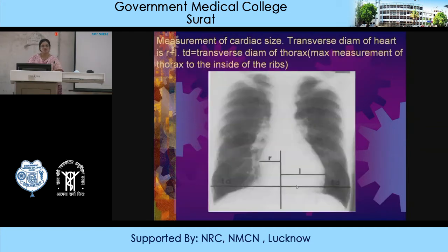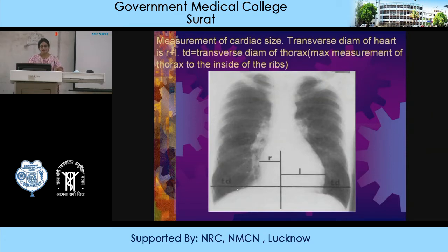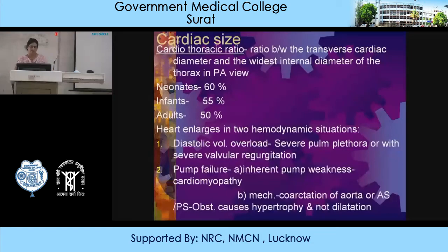To measure cardiac size: draw a vertical line overlying the spinous processes — the frontal film must be centered. Measure the maximum dimension from this vertical line to the right cardiac border, then to the left cardiac border. Add right plus left, then divide by the transverse diameter (maximum measurement of the thorax from inside the ribs). R plus L divided by transverse diameter gives the ratio: 60%, 55%, and 50% for neonates, infants, and adults respectively. Values exceeding these indicate cardiomegaly.